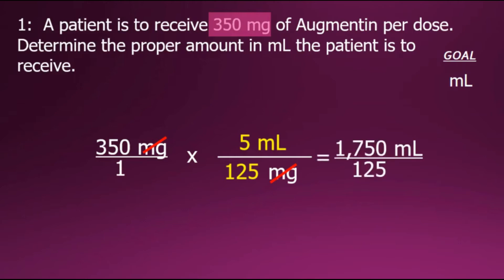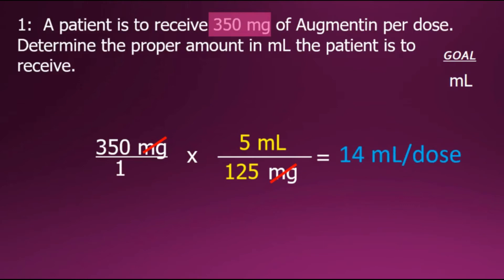Perform the indicated multiplication of the fractions — multiplying numerators and multiplying denominators. Last step, we divide, and note that our unit is in milliliters. So here we have the correct answer in milliliters per dose.